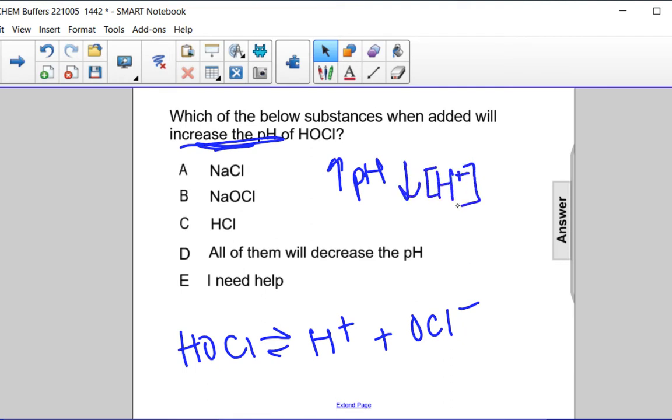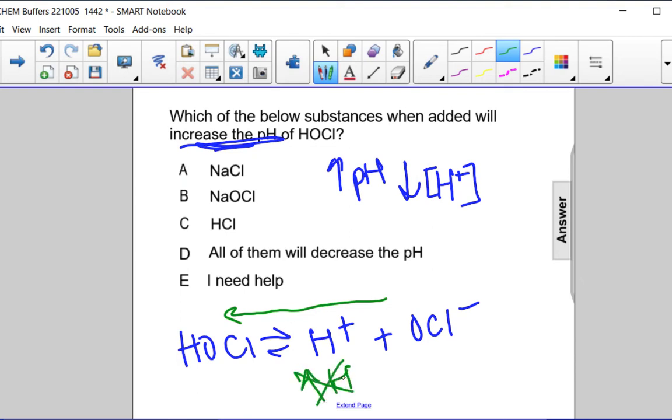And to do that we have to shift the equilibrium to the left, but not by increasing this. We don't want to increase this. We want to decrease it. So how do we decrease it? We increase the concentration of OCl-.